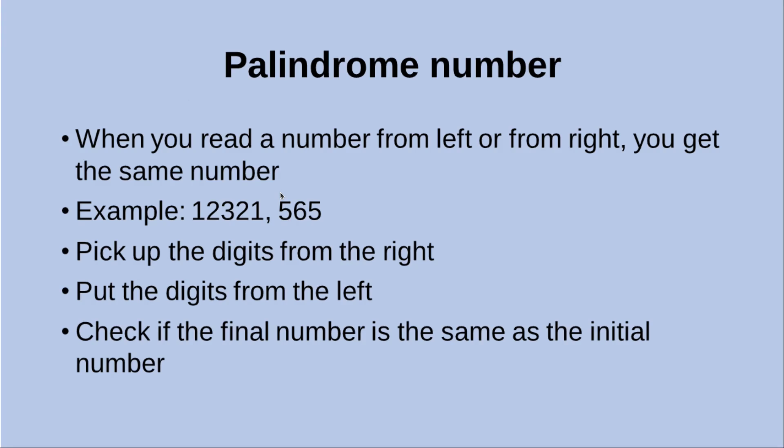So how can we prove that a certain number is a palindrome number? We can just pick up the digits from the right-hand side, put the digits picked up along the left-hand side, and then check if the number obtained finally is the same as the initial number.